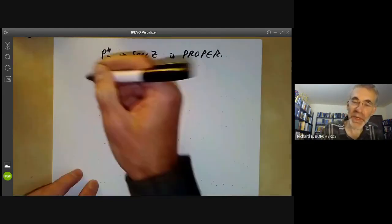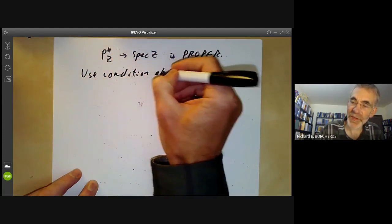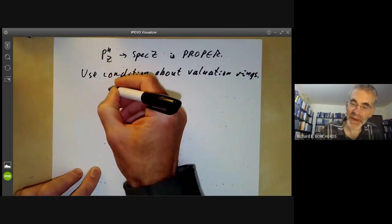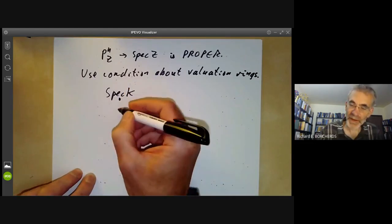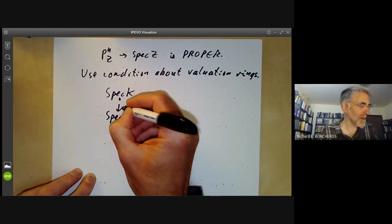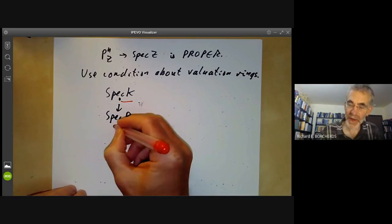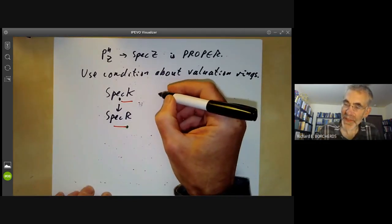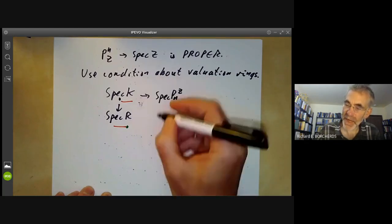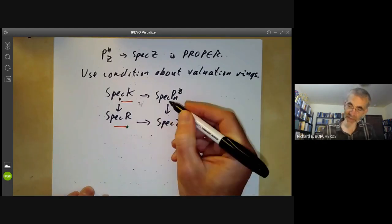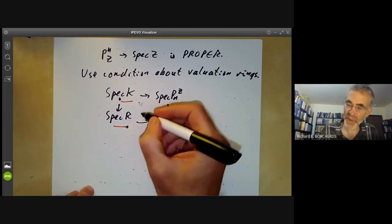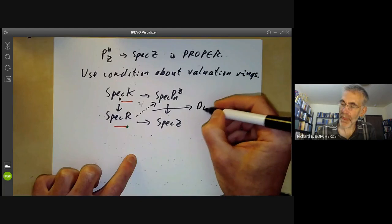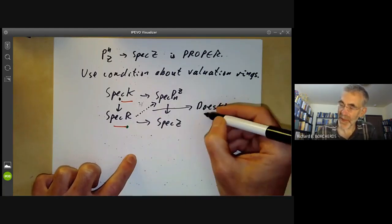What we're going to do is use the condition about valuation rings. So what we have, the picture we have is we have the spectrum of K, which is a point, and we have the spectrum of R. I could draw this as a one-dimensional red point. And we have the spectrum of R, which looks like this red point together with an extra point which is closed. And here we have the spectrum of P^N_Z. And here we have spectrum of Z, which is boring because for every scheme there's a unique map to spectrum of Z. So these maps give us no information whatsoever. And we want to know, does there exist a unique map here? And uniqueness already follows from separability. So we want to know, does this exist?